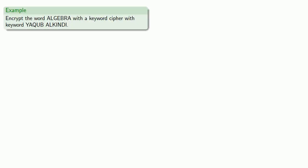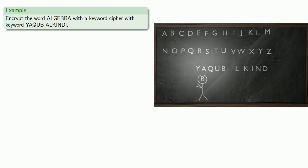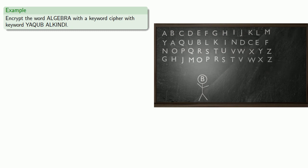Let's encrypt the word ALGEBRA with a keyword cipher using the keyword YAQUB ALKINDI. Yaqub al-Kindi, by the way, is an Arab mathematician who wrote one of the first treatises on cryptography. Bob can create the substitution table as he needs it, and then encrypt the message.